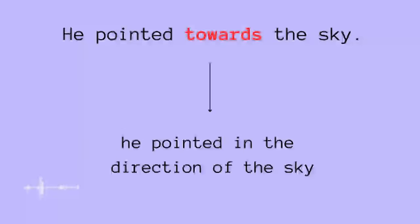He pointed towards the sky. What does that mean? It means that he pointed in the direction of the sky. Let's say he was in a room and all of a sudden opened the door or maybe opened the balcony to look at the sky. So we can tell that he is basically looking towards the sky, something like that.